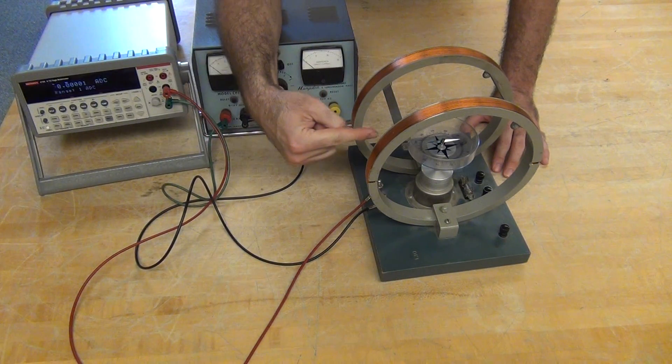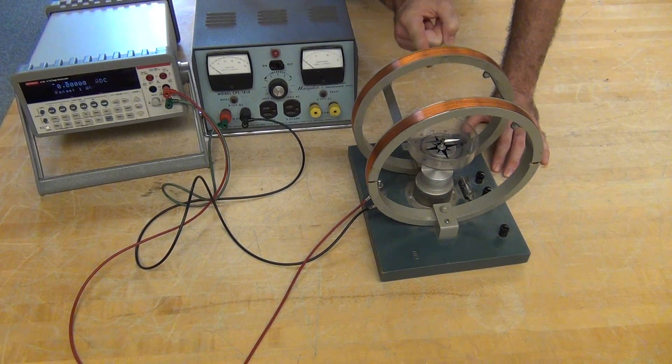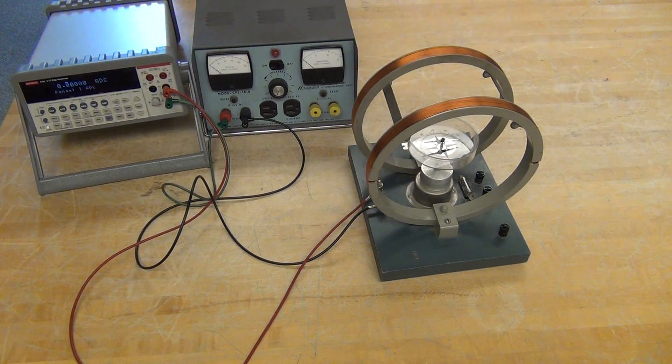Now I know that north, magnetic north, is that direction. And any additional field that I supply is going to tweak the compass needle.